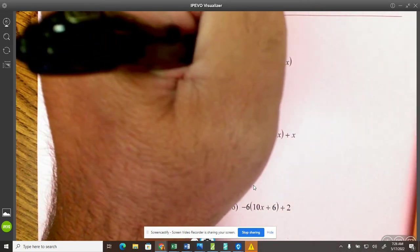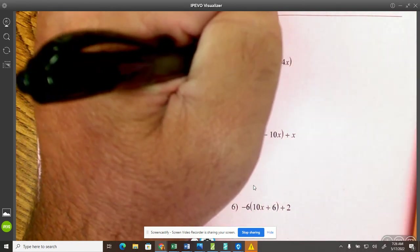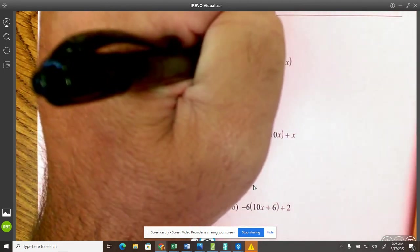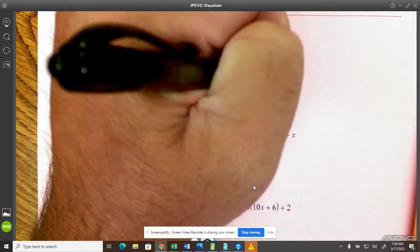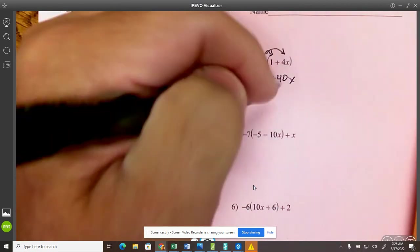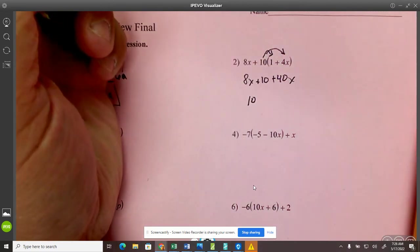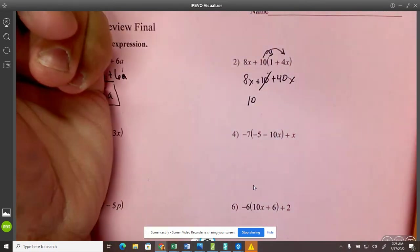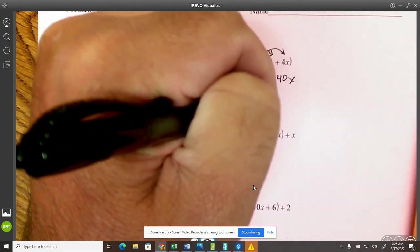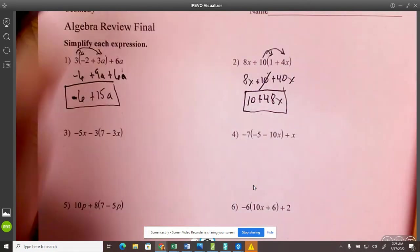Same thing here. Can't do anything with 8x. I'm just going to bring it down. 10 times 1 is 10. 10 times 4x, 40x. Combine like terms. Or I can go ahead and bring down the 10 and get that out of the way. That helps. 8x plus 40x is 48x. And that's all you can do. You can't combine anything else.